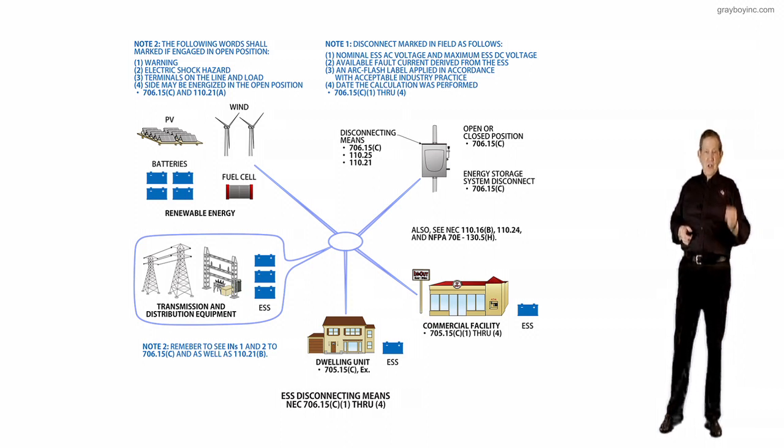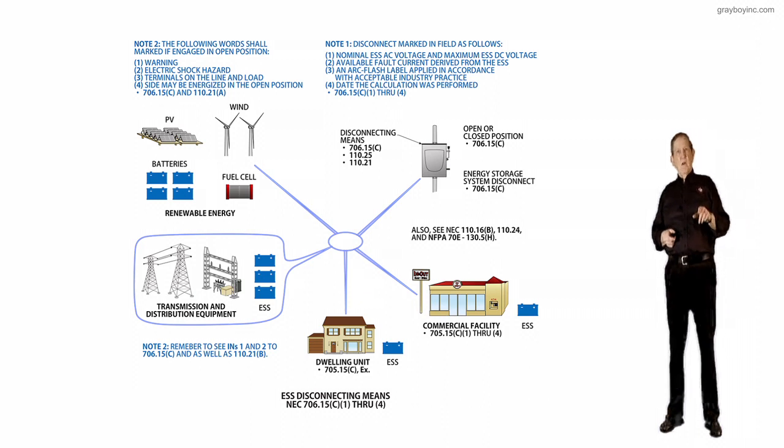Based upon the type of loads that the generator would supply is how we'd classify it. So we know, we've said before, 700.2, 701.2, 702.2 will list the loads the generator supplies for the user to classify it.